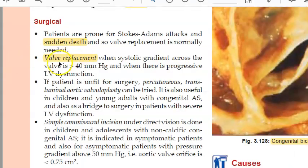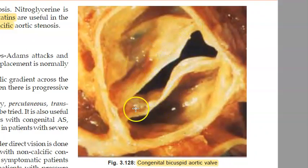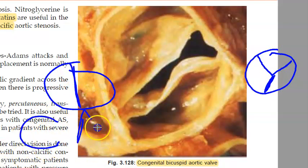If the valve has an issue, valve replacement is performed. Transcatheter valve replacement is an option. The image shows a congenital bicuspid aortic valve with only two cusps. In young people, the problem is a bicuspid valve; in old people it is degeneration or calcification showing three cusps with degenerative changes. This is congenital aortic stenosis — congenital bicuspid aortic valve.